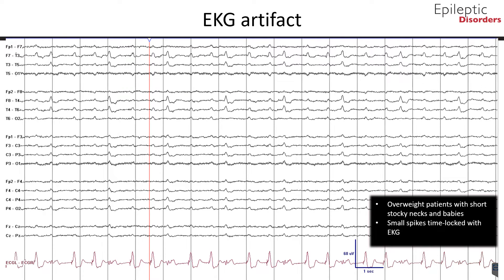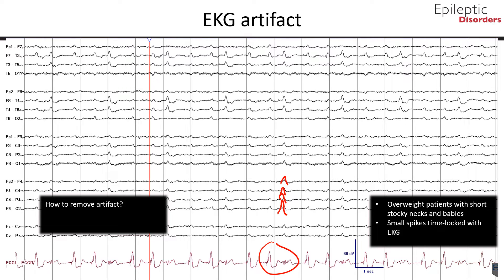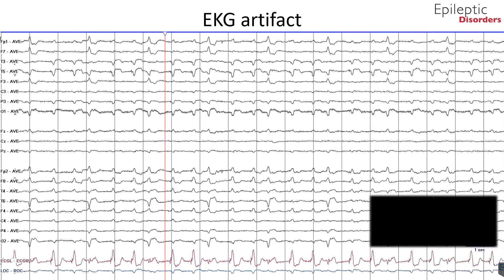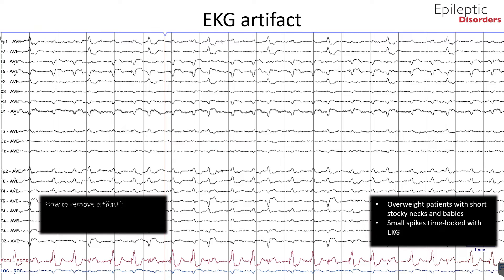EKG can be readily identified as a source because of the regularity and time-locked waves synchronous with the EKG. This bipolar montage shows a patient with a complex cardiovascular condition and an abnormal heart rhythm. Note the synchronization of each EKG spike that is time-locked with the EEG spike outlined in red. EKG artifact can be easily eliminated by replacing or repositioning the EKG lead or by using a non-cephalic reference. On average montage, EKG artifact is made more apparent, with each QRS complex coinciding with the scalp EEG spike.